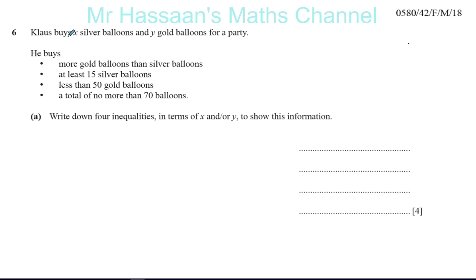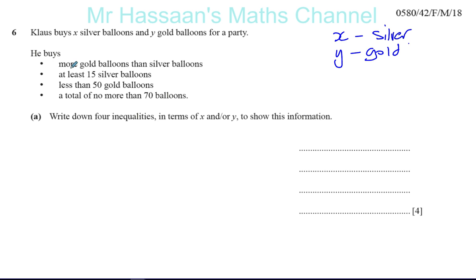Klaus buys X silver balloons and Y gold balloons for a party. To be very clear: X is the number of silver balloons and Y is the number of gold balloons. He buys more gold balloons than silver balloons, at least 15 silver balloons, less than 50 gold balloons, and a total of no more than 70 balloons. We have to write down four inequalities in terms of X and/or Y to show this information.